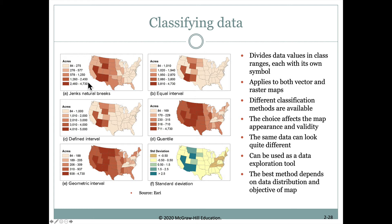When making a classed map like these choropleth maps, how do we decide what the numeric values of these categories should be? There are actually a lot of different ways to do it. All of these different methods are applied to the same data set, so we can get very different patterns on our maps just by choosing how we break out these categories.